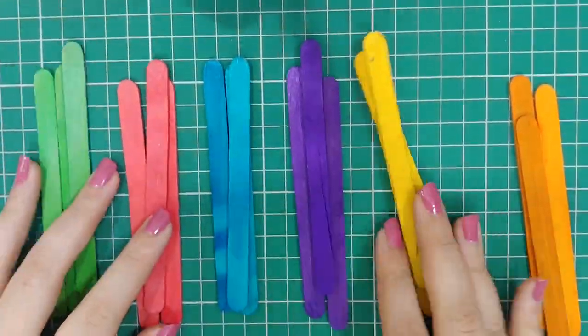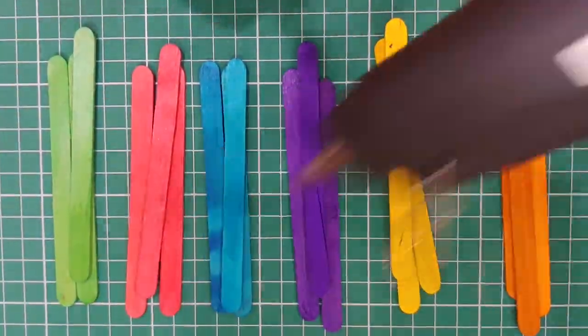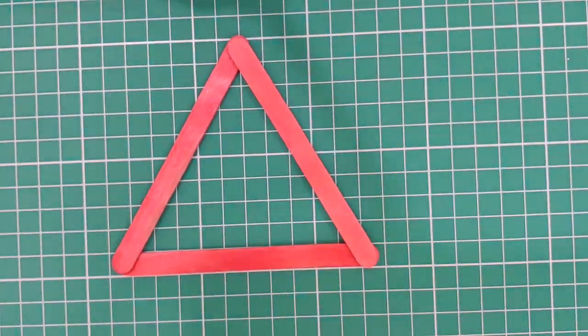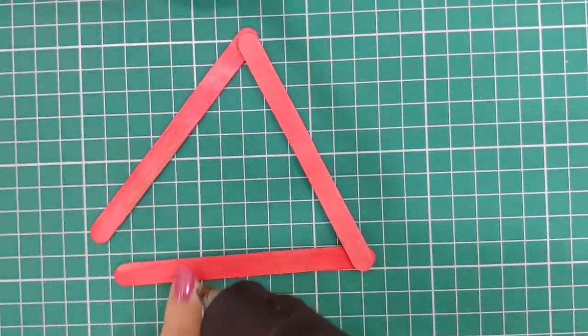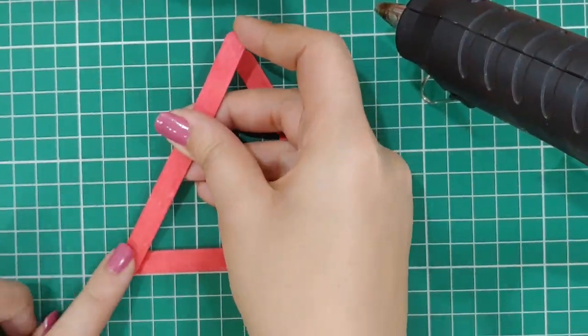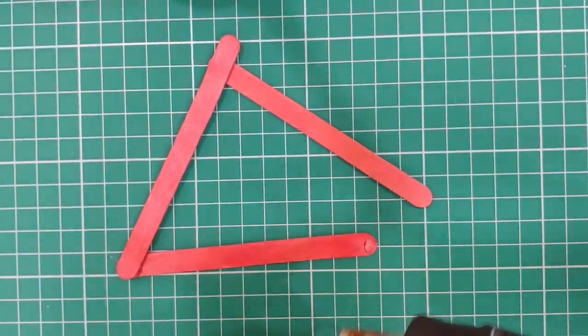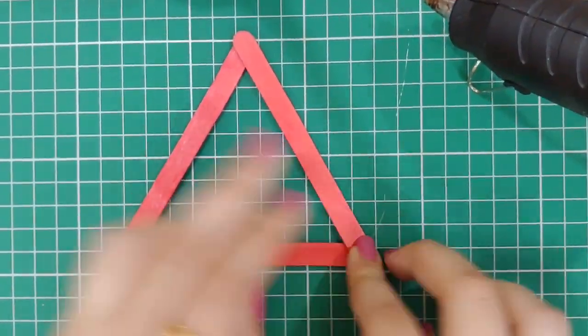Now our last and final DIY is a pen stand. All you need is different colored ice cream sticks and a hot glue gun. Now all you have to do is stick your ice cream sticks in the form of a triangle first, and then take another pair or another color of ice cream sticks and make another triangle.